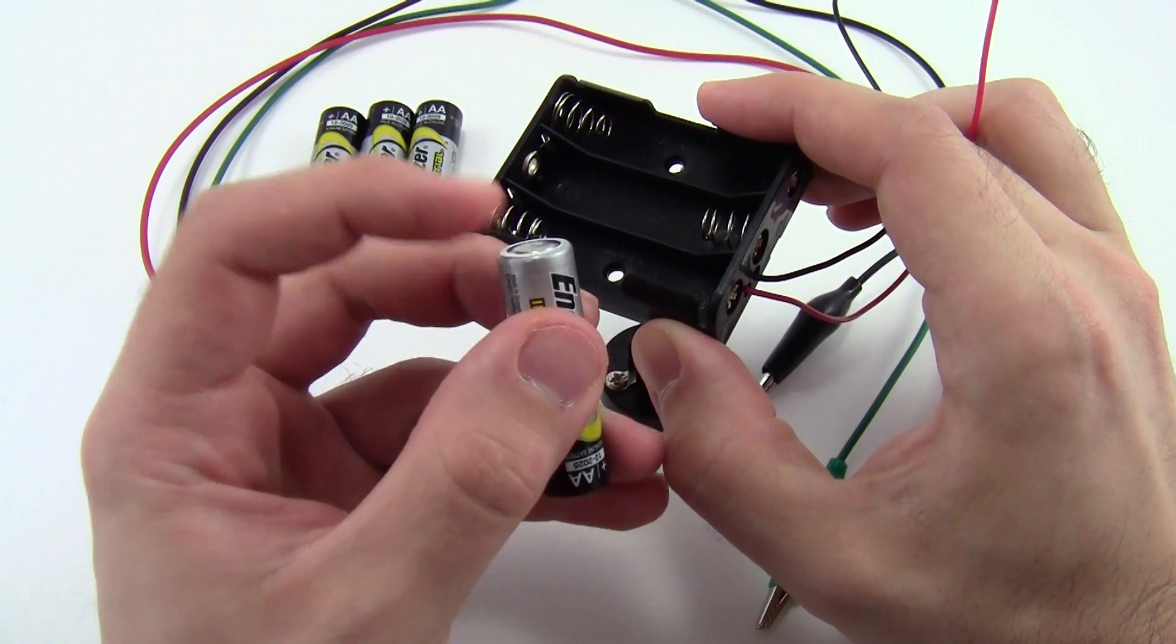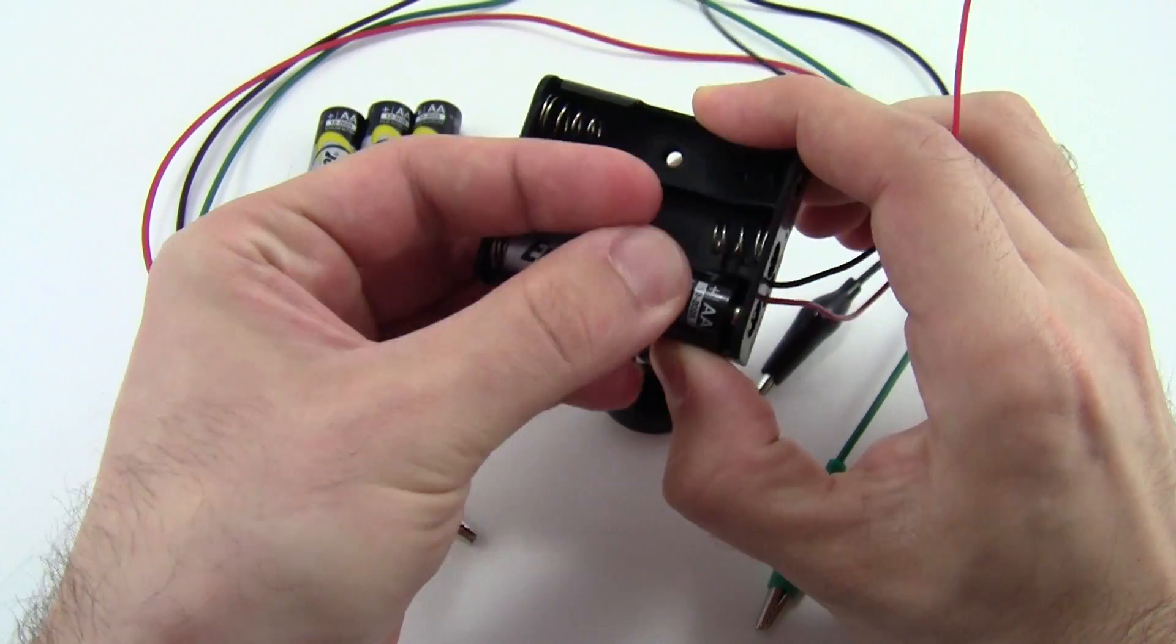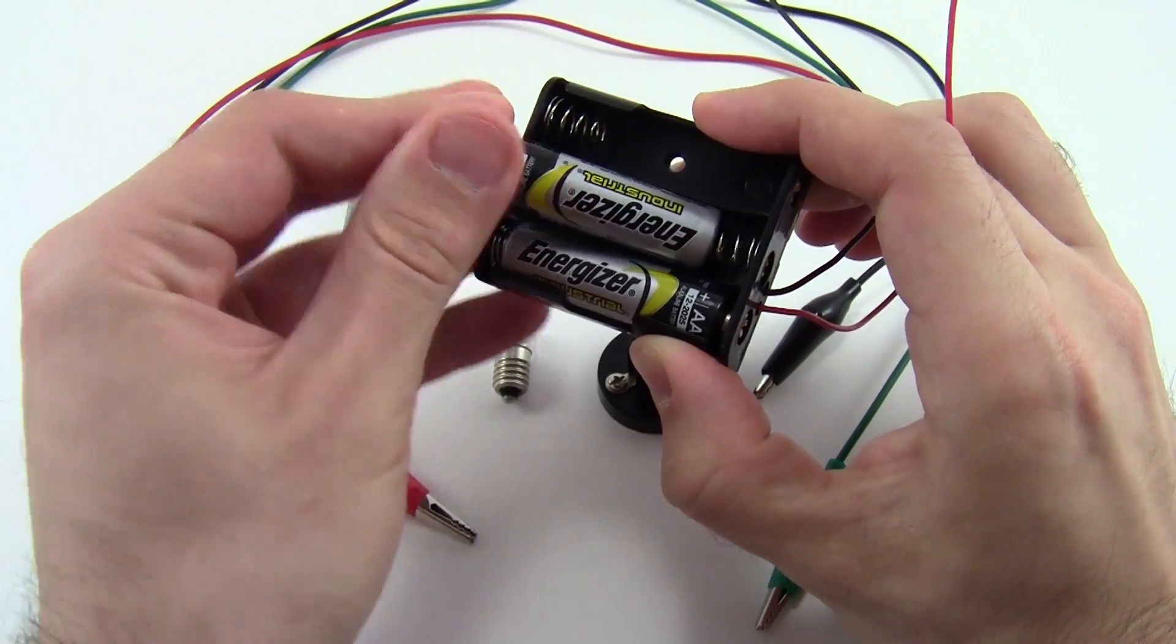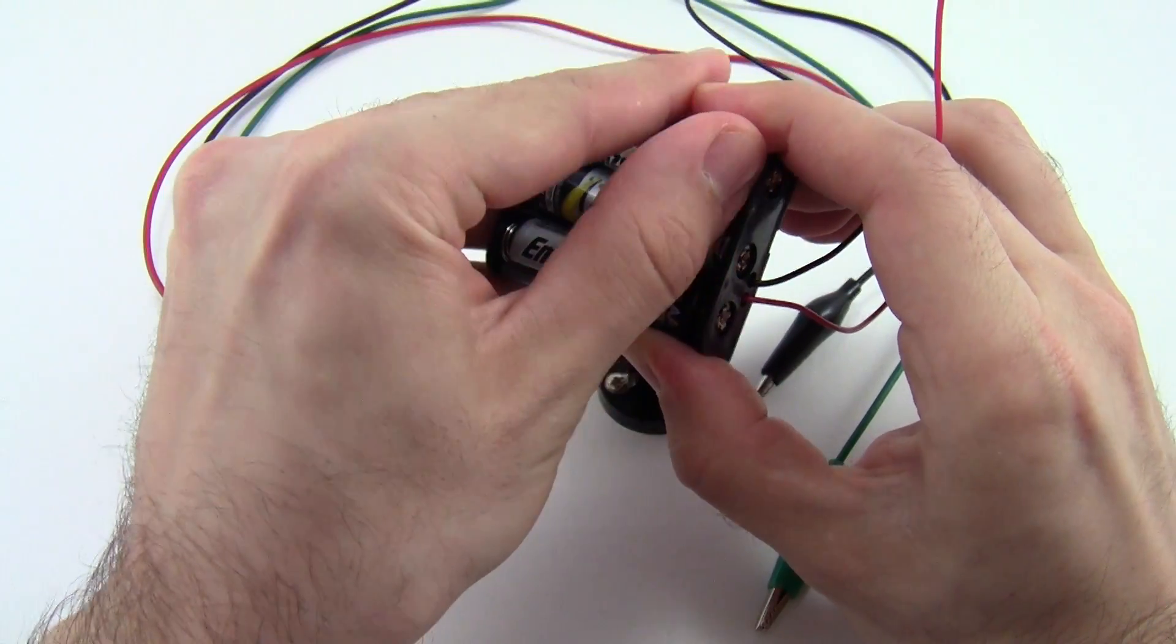You can also check that the flat end of the battery is the side that goes up against the spring. So put three batteries in the battery holder, and then put the fourth battery aside.